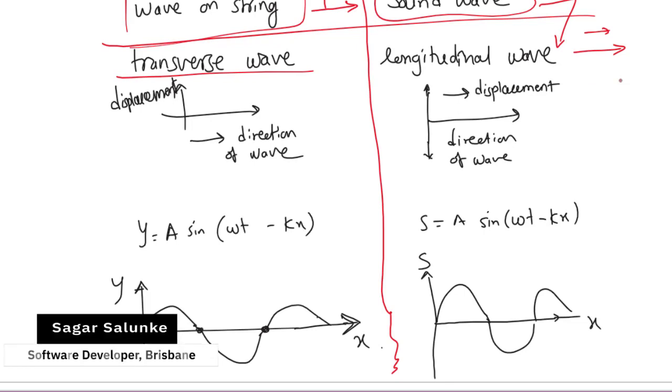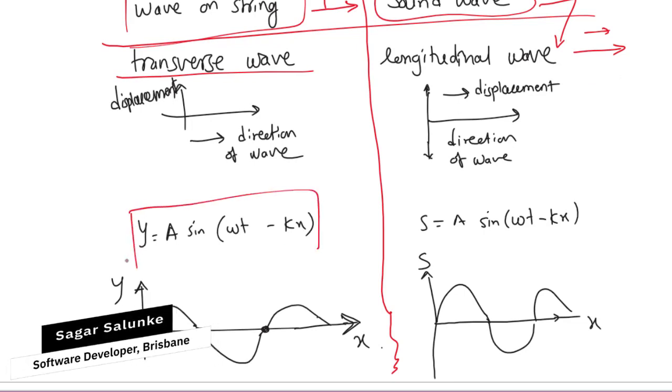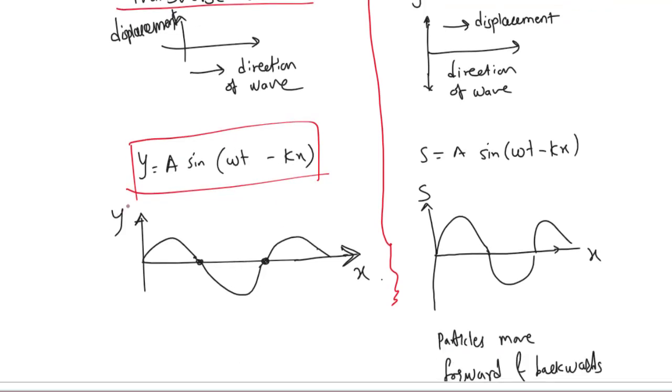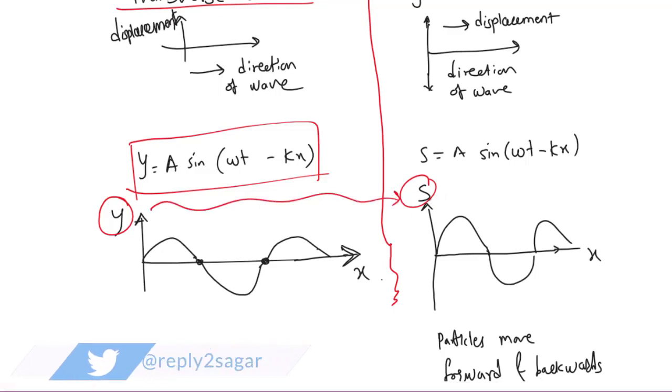And the equation is actually same for both the waves, wave on the string and the sound waves, which is given by A sin(ωt - kx). Here instead of y, they are using s, which is the displacement of a sound wave. That's why they are using s, but basically the equations are the same.